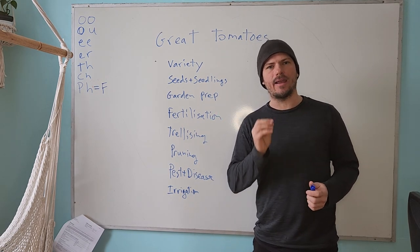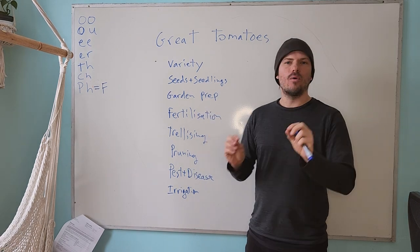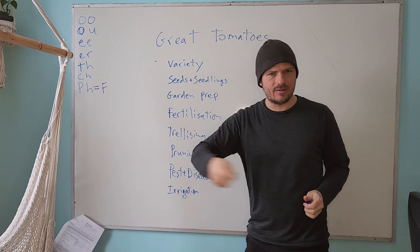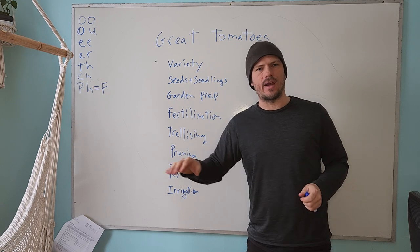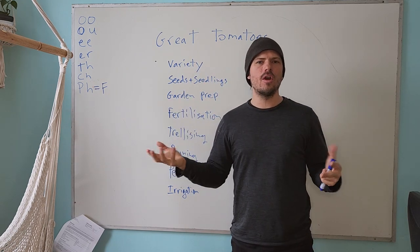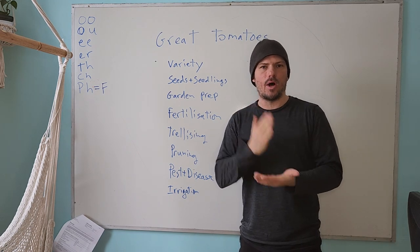They need to dry in between waterings. When the seeds are just tiny and they haven't come out yet, yes, you need to keep it evenly moist, but not soaked. They need to not dry out at that stage. But once the plant has come out and it's starting to grow, you need to make sure that you're letting the soil dry in between waterings.